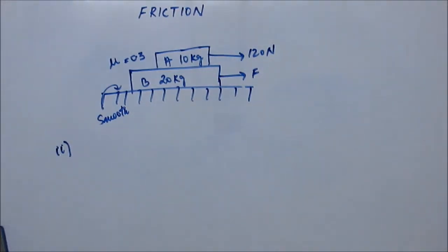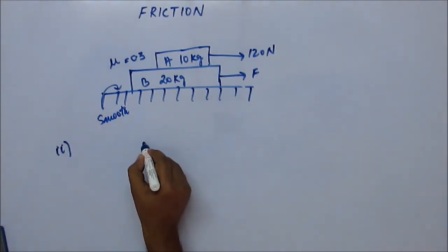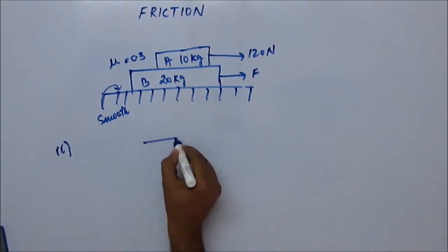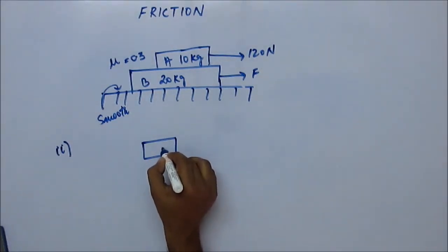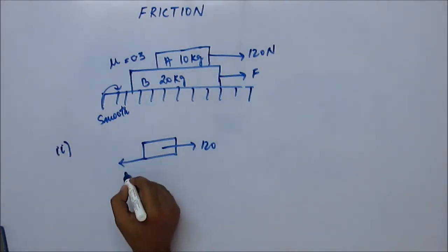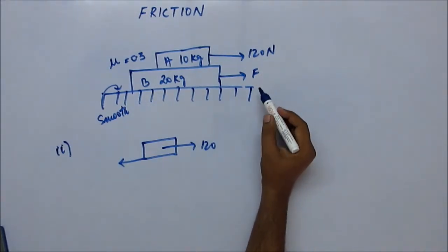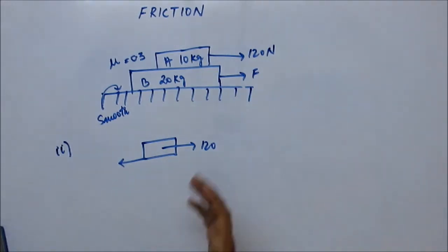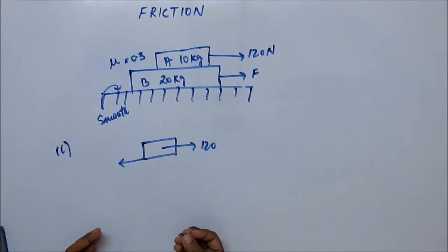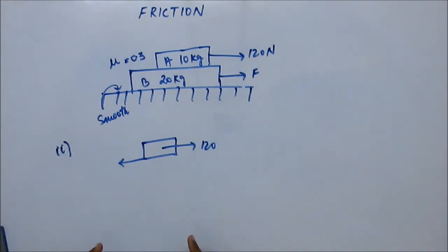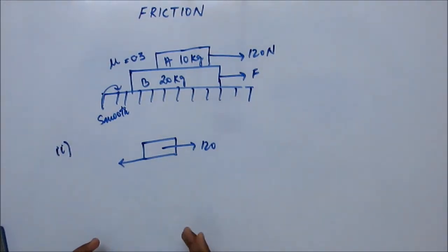So if A and B are moving together, then draw the FBD of A and the FBD of B. 120 N in the forward direction, and for minimum amount of force you require maximum frictional force, because there is slipping. If there is no force and you increase the force by a small amount they will still be slipping, and if you keep increasing the force, at one point slipping will stop.